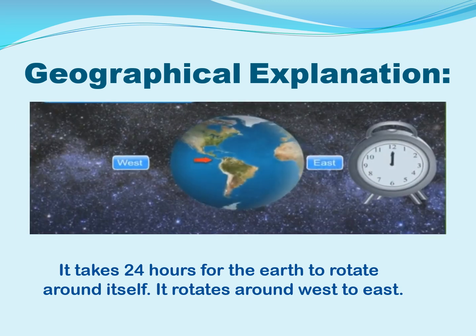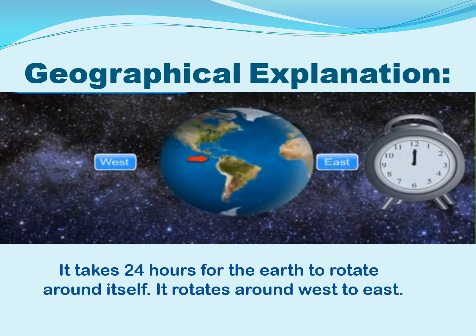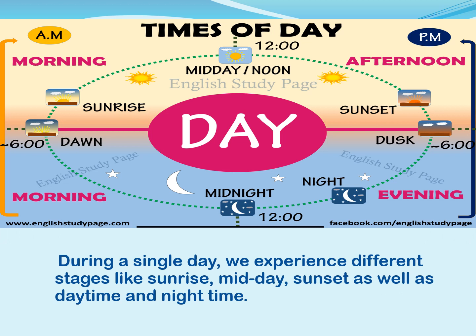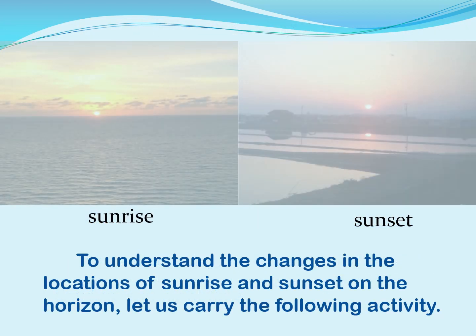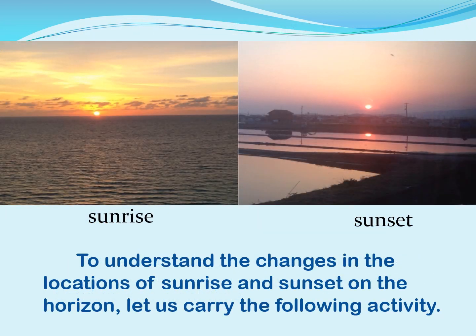Geographical explanation. It takes 24 hours for the Earth to rotate around itself, and it rotates from west to east. During a single day we experience different stages like sunrise, midday, sunset, as well as daytime and night time. To understand the changes in locations of sunrise and sunset on the horizon, let us carry out the following activity.